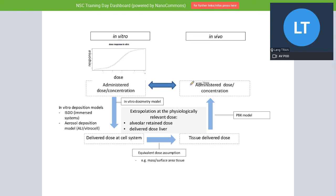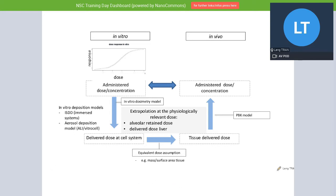We can work backwards to find what the administered dose or concentration in vivo gives you the equivalent scaled dose between in vitro and in vivo. From the left we go to the right using the PBPK, then come back to the equivalent concentration in the air in vivo. This has been attempted many times in nanotoxicology and I'm glad to report that we do see a very nice correlation, at least for insoluble nanomaterials, between in vitro and in vivo for the lung.